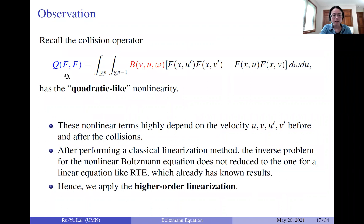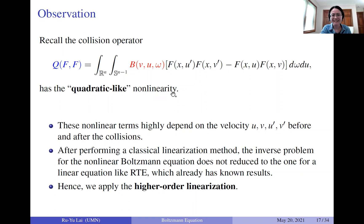Looking at the collision operator once more: it has two nonlinear terms that look quadratic, but are not truly quadratic because they depend on different velocities — the first term depends on U-prime and V-prime. So if we try to use a linear relation in the classical way, we cannot reduce the nonlinear Boltzmann equation to the linear RTE case. This means we cannot directly use known results for RTE. This motivates us to consider a different approach.